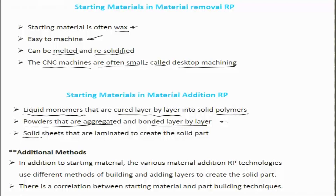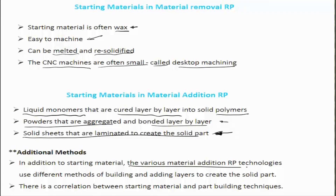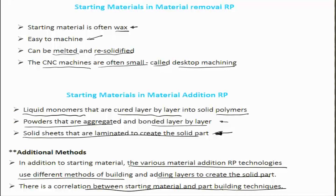Solid sheets can also be laminated to create solid parts, with the key aspect being the layer-by-layer construction of the designed shape, form, or size through the CAD interface. There is a correlation between the starting material and the part-building technique, and this combination leads to the realization of the final rapid prototyped product.